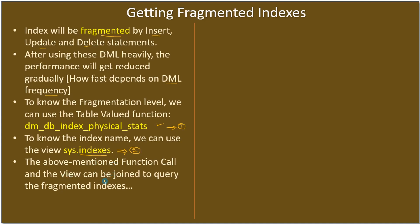The dm_db_index_physical_stats is a table-valued function, meaning when you execute it, it returns rows and columns of data — simply, it returns a table. We haven't yet learned about table-valued functions, but in the coming sub-series we will learn about creating functions and how to return a table from a function. When a function returns a table, we call it a table-valued function.